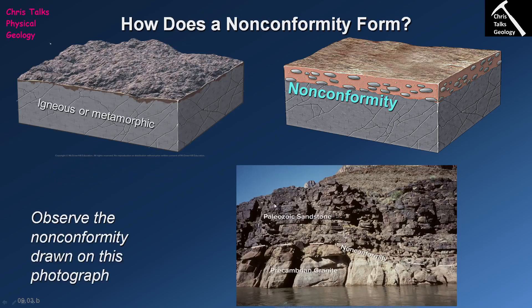Looking at this image, we can see exactly this situation. Down here we have a granite that is Precambrian — older than 541 million years — which is quite massive in appearance with no obvious layering and a light, creamy grey color. Above it we have a sequence of Paleozoic sandstones younger than 541 million years, with clearly horizontal bedding. We have an igneous rock in contact with a sedimentary rock, and the contact between them is our non-conformity.